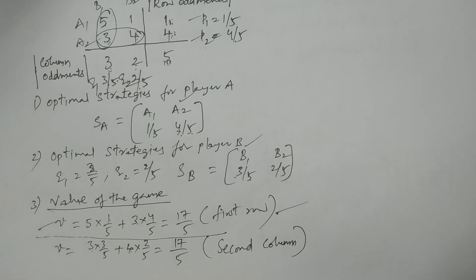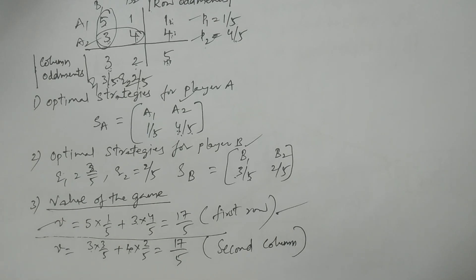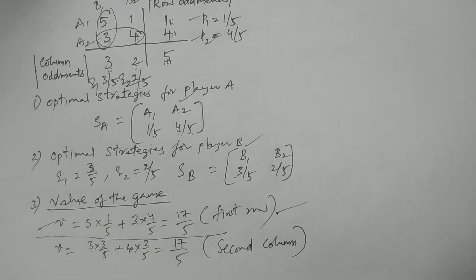Then write the augmented matrix. Take modulus of row oddments and modulus of column oddments. Use these to find fractions P1, P2, Q1, Q2 — all probability values. From these, identify the optimal strategies for Player A and Player B, and the value of the game. This completes the discussion of the matrix augments method problem. Thank you.